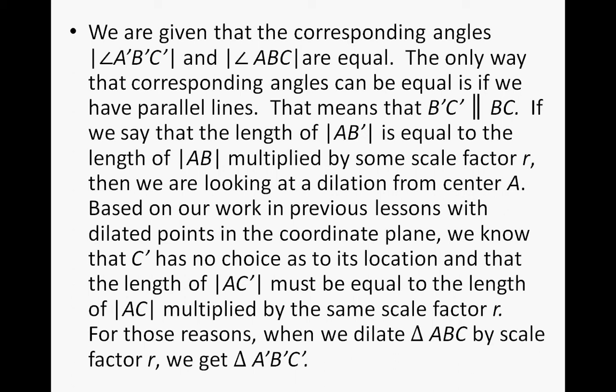Here's one way that you could have paraphrased it. We are given that corresponding angles A'B'C' and ABC are equal. The only way that corresponding angles can be equal is if we have parallel lines. That means that B'C' is parallel to BC. If we say that the length of AB' is equal to the length of AB multiplied by some scale factor R, then we are looking at a dilation from center A. We're working backwards using the converse of these theorems and properties.